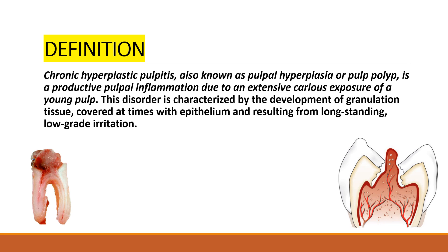Chronic hyperplastic pulpitis is also called pulpal hyperplasia or, commonly, pulp polyp. A polyp is an abnormal tissue growth. When your pulp grows abnormally, it is a pulp polyp, and it is a productive pulpal inflammation — productive meaning a growing type of inflammation. The pulp grows abnormally due to extensive carious exposure of the young pulp. This is usually found in young pulp, and it is a type of irreversible pulpitis that, if not treated, can turn into chronic hyperplastic pulpitis.